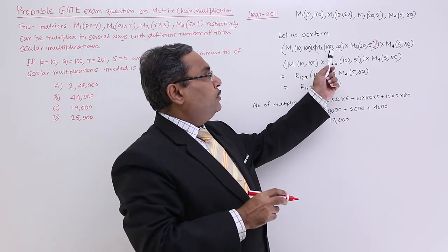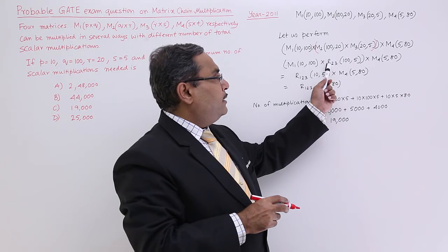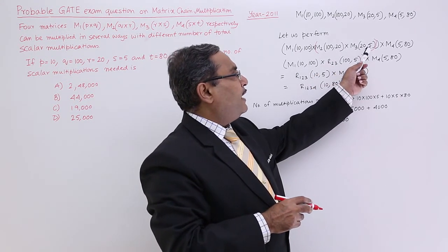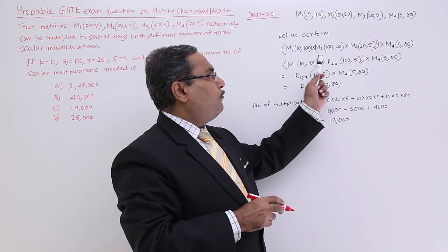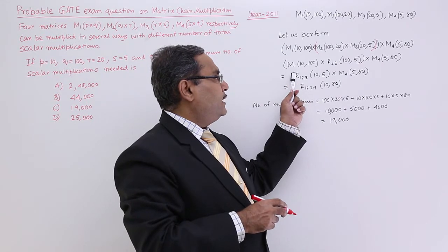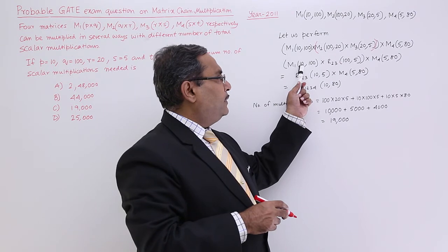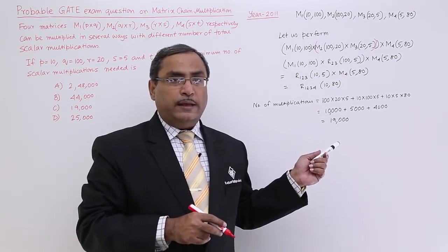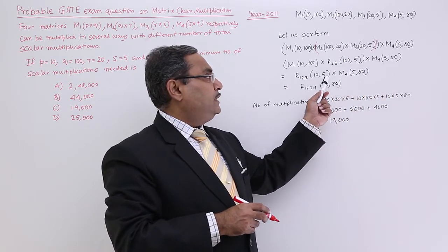Now you see, this resultant matrix will be resultant matrix R2,3 which will be having dimension 10×5. So, this 100 and this 100 is matching, so they can go for multiplication. The resultant matrix will be R1,2,3. The matrix will have the dimension 10 and 5. Obviously, it can get multiplied with M4 because M4 is having 5 rows and 80 columns. So, 5, 5 are matching.